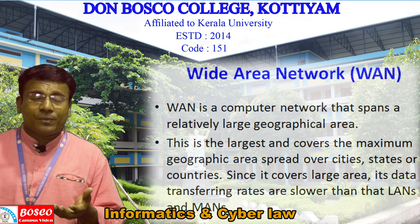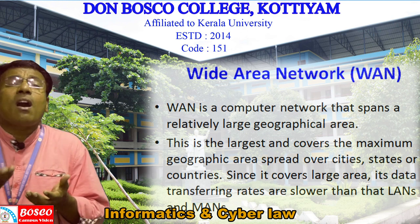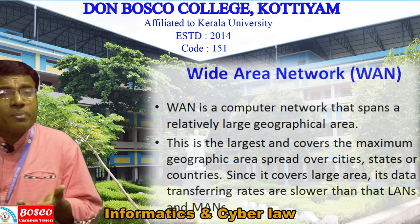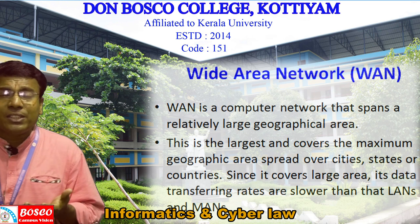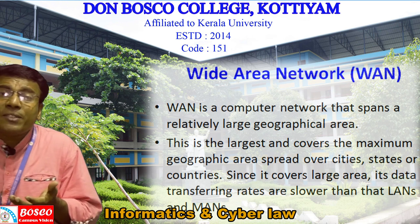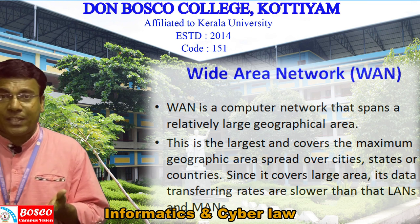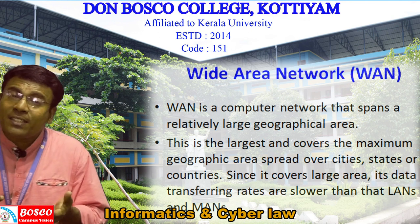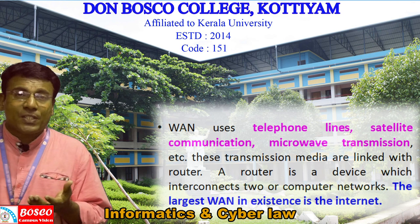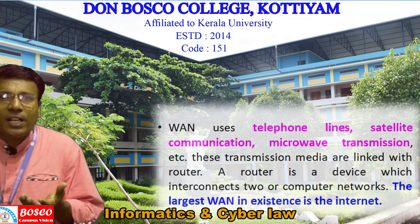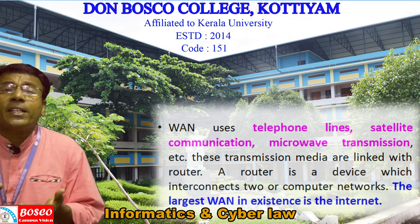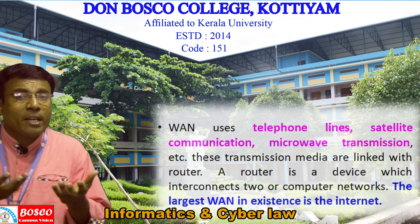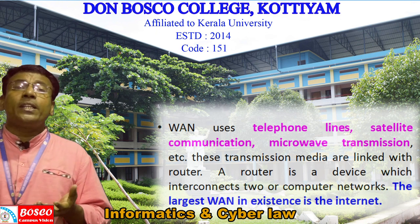Wide Area Network, or WAN, is a computer network that spans a very large geographical area. It is the largest network, covering cities, states, or countries. Since it covers a very large area, its data transfer rate is slower than MANs and LANs. The Internet is a WAN. WAN uses telephone lines, satellite communication, microwave transmission, and these transmission media are linked with a connecting device called a router, which interconnects two or more networks.